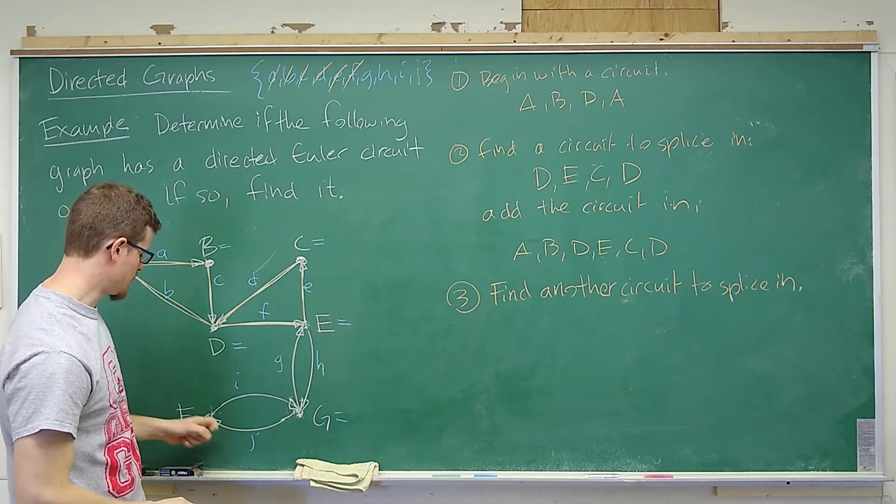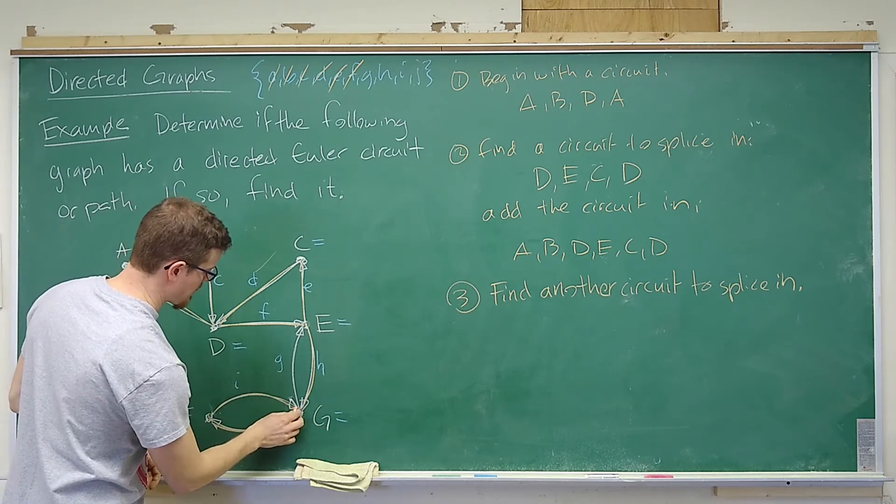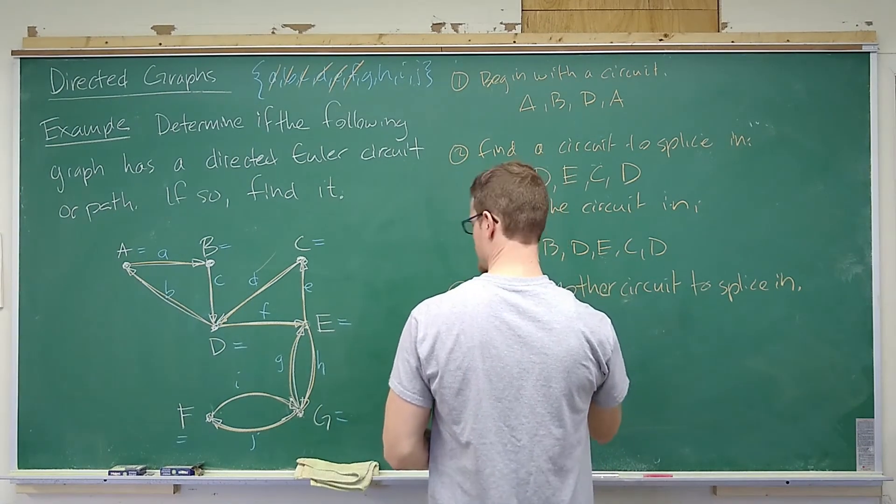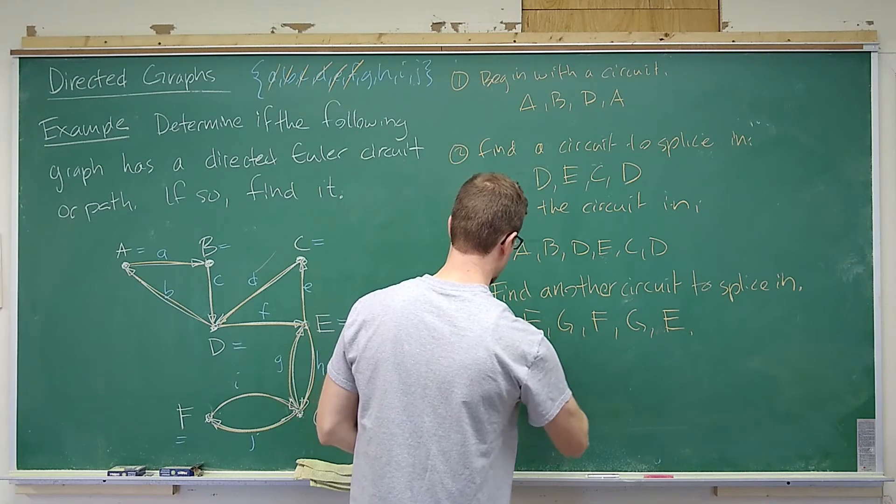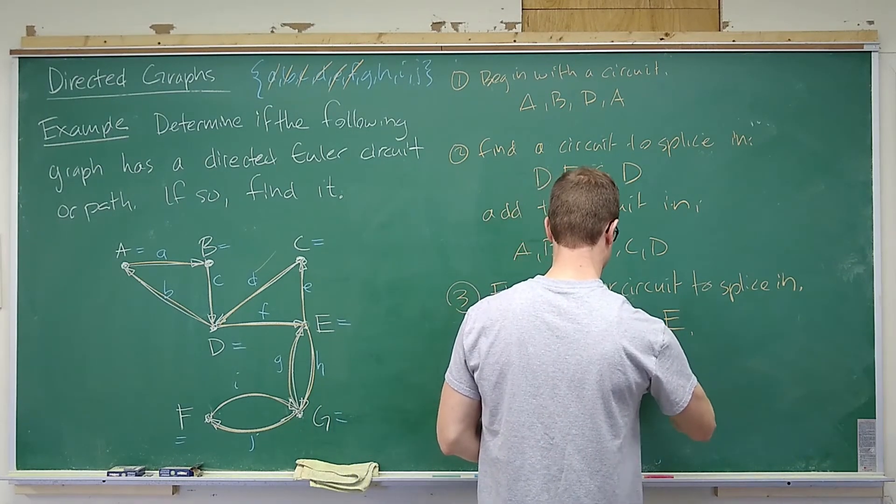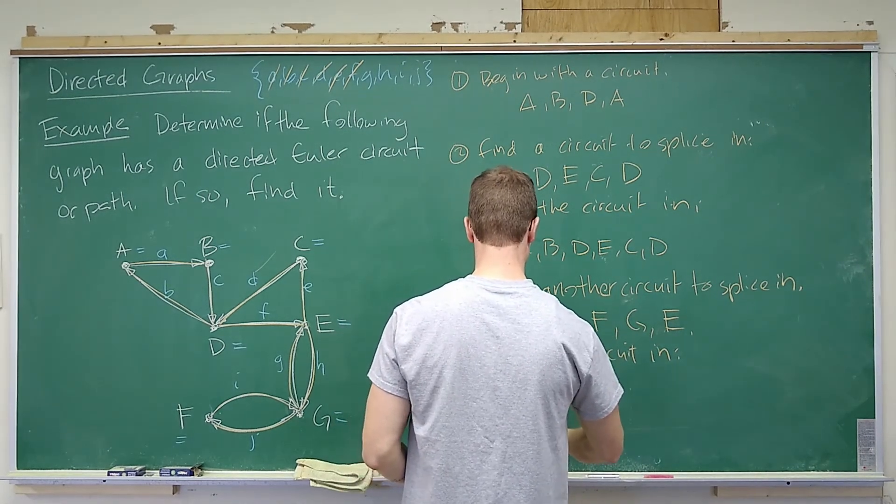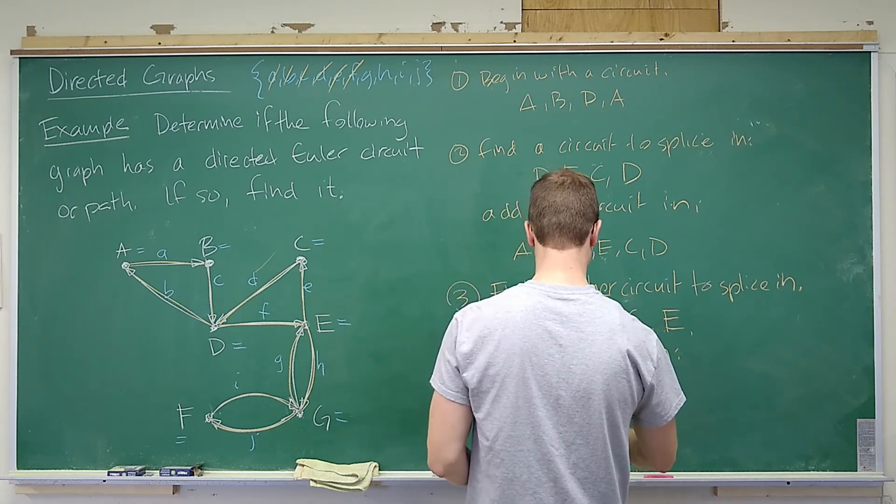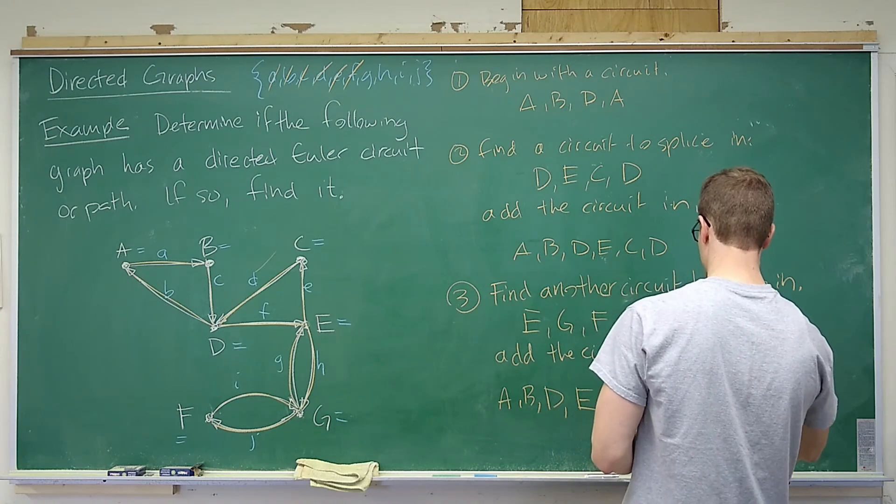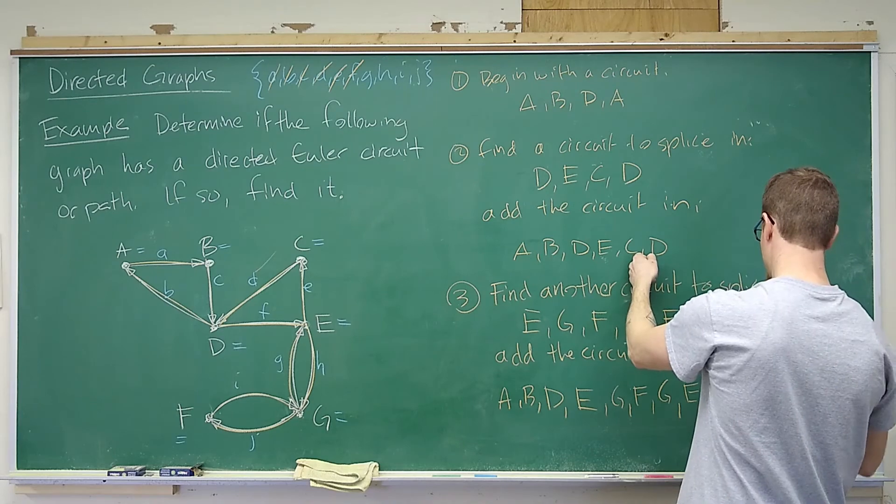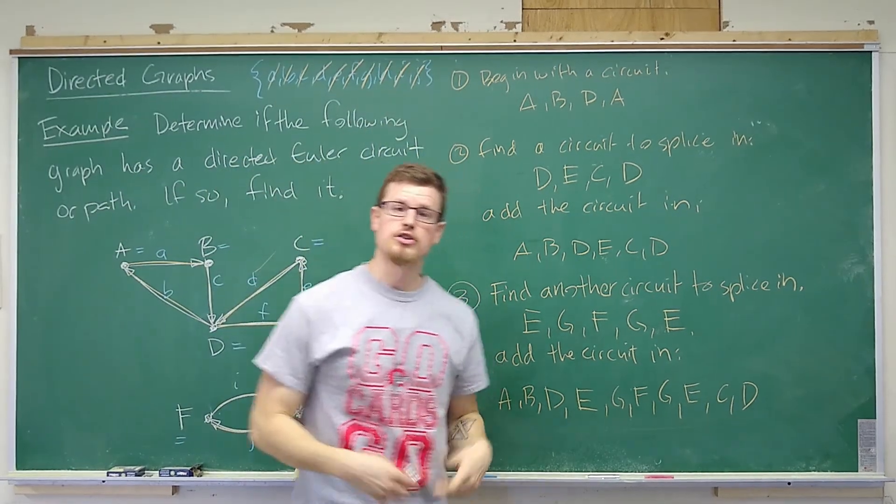So we have E to G, G to F, F to G, and G to E. I can travel E to G, G to F, F to G. So that was E, G, F, G, E. And then I want to add it in. I'm replacing this one instance of E with this entire circuit. So I have A, B, D, E is being replaced with all of this: E, G, F, G, E. And now I've picked back up where I left off: C and D. Now that got me the four edges G, H, I, and J.